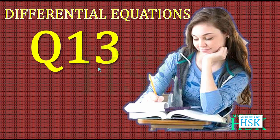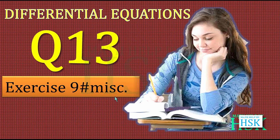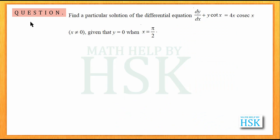Hello friends, in this video I am going to take question number 13 of miscellaneous exercise of chapter 9. The question is like this: find a particular solution of the differential equation dy by dx plus y cot x is equal to 4x cosec x, given that y is equal to 0 when x is equal to pi by 2.